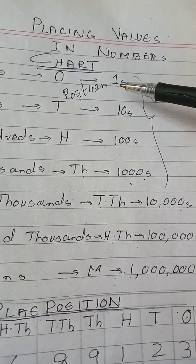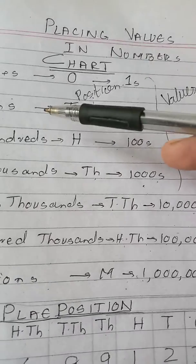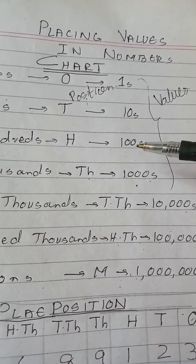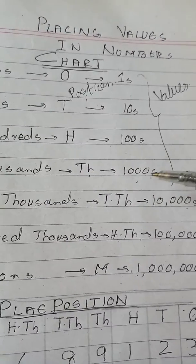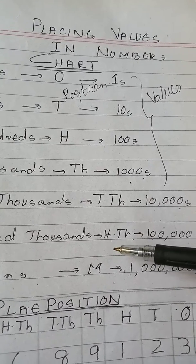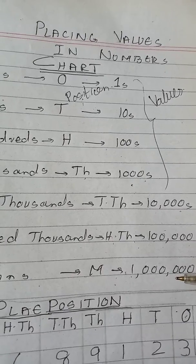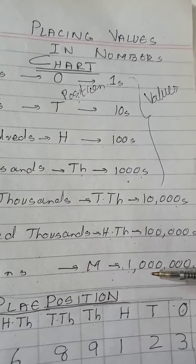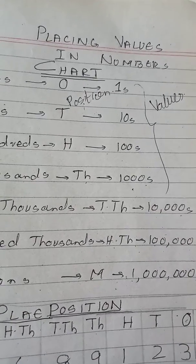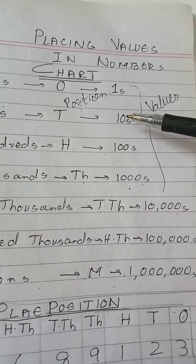Any digit at position ones will be multiplied with one. Any digit at position tens will be multiplied with ten. Similarly at position hundreds, at position thousands it will be multiplied with one thousand, at ten thousands with ten thousand, at hundred thousands with hundred thousand. And at the millions position it will be multiplied with one million. Remember: one million has six zeros, hundred thousand has five zeros, ten thousand has four zeros, thousand has three zeros, hundred has two zeros, and ten has one zero.